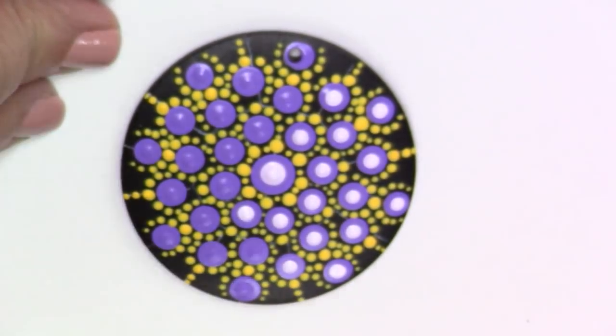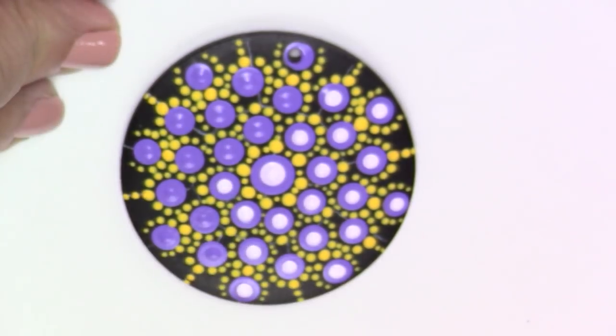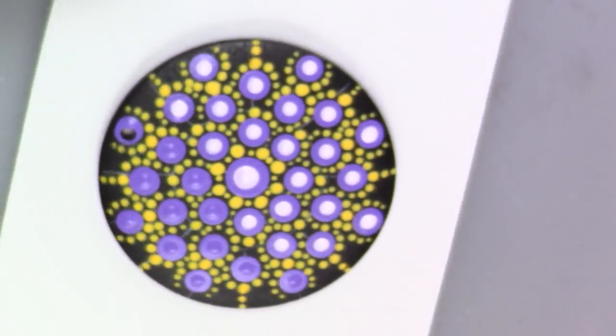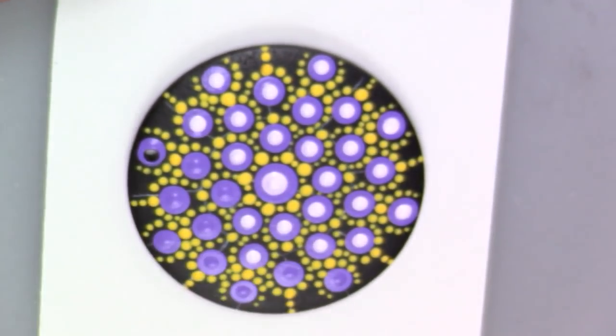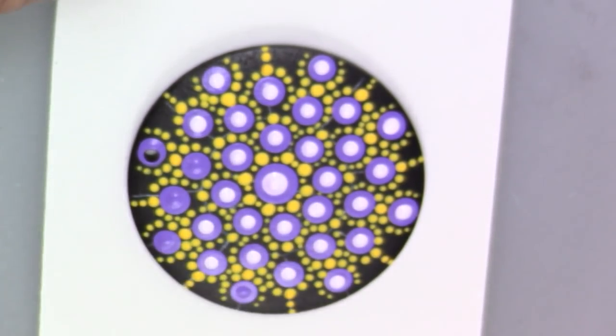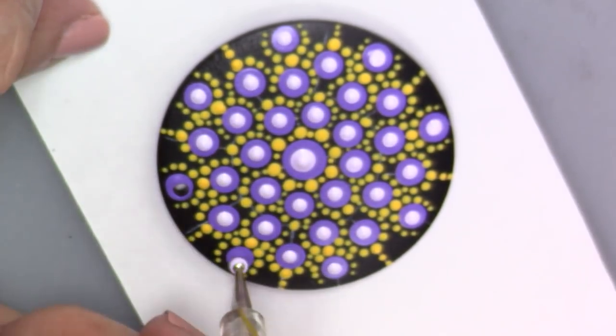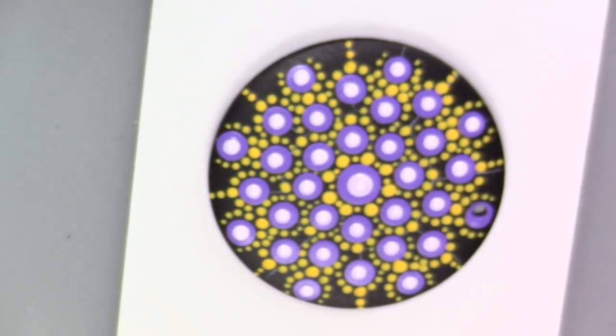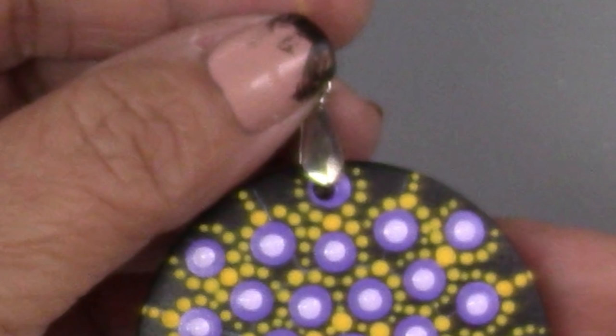I just mixed some of the purple with a little bit of white to get a lighter shade. You could introduce another color here if you wanted. That would be really fun, maybe like an orange or something might be nice as top dots. Just try out some different things. That's why I think using the little discs for the cutouts is a nice way to get started with this.